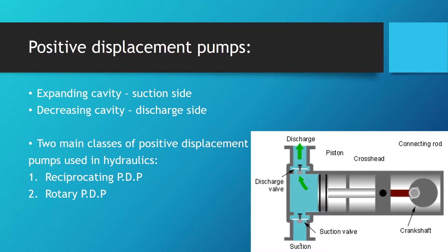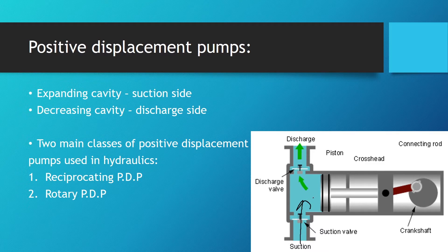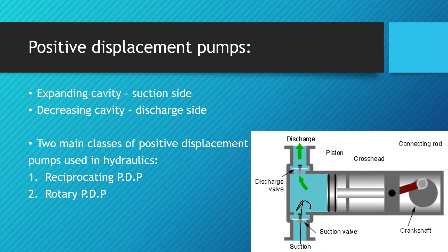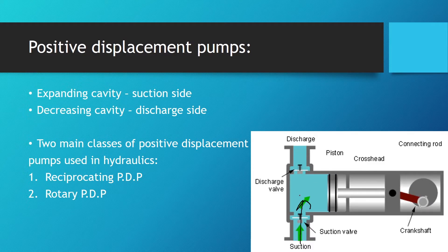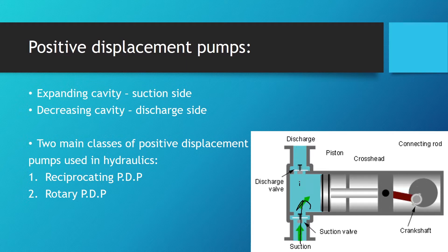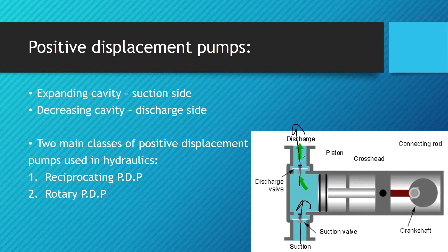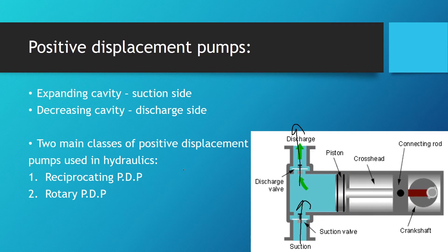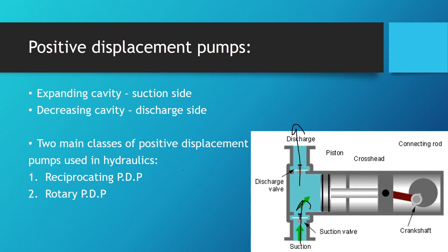When the piston goes left, it decreases the cavity, making the volume smaller and increasing the pressure, which drives the fluid out through the discharge valve. This was also covered in Hydraulics 101, and we'll cover piston pumps in more detail in upcoming lessons.